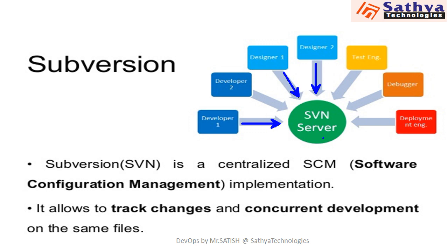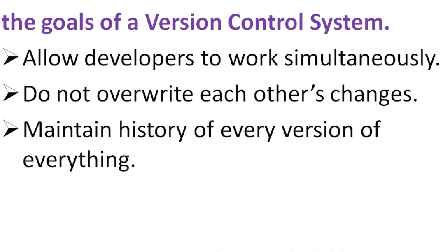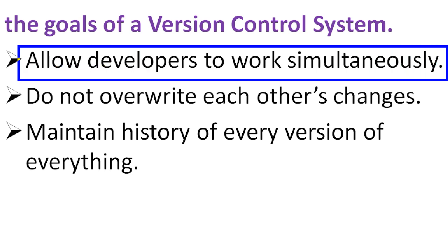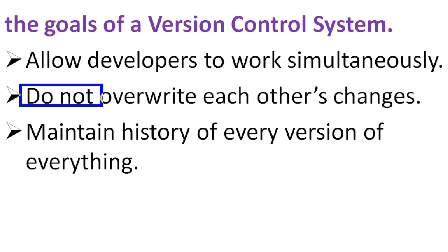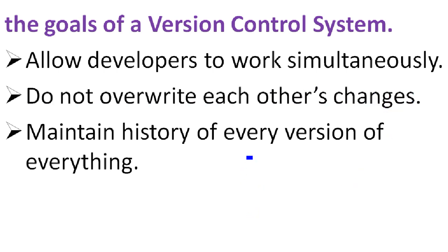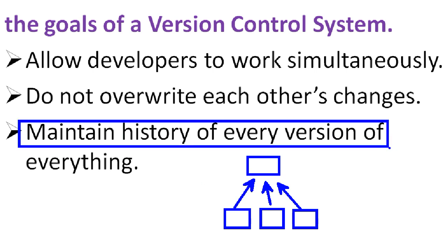Now we can see what is the need for version control systems. They allow developers to work simultaneously — that is, multiple developers will work at the same time and not override each other's changes. If multiple developers add their code to the central repository, we have to maintain their history and we should not override their code. One more thing: maintain history of every version of everything.